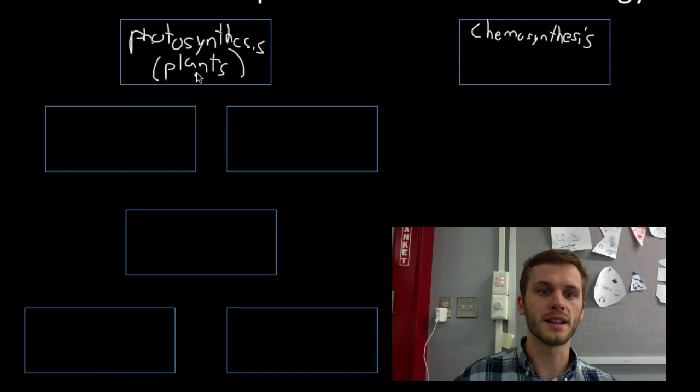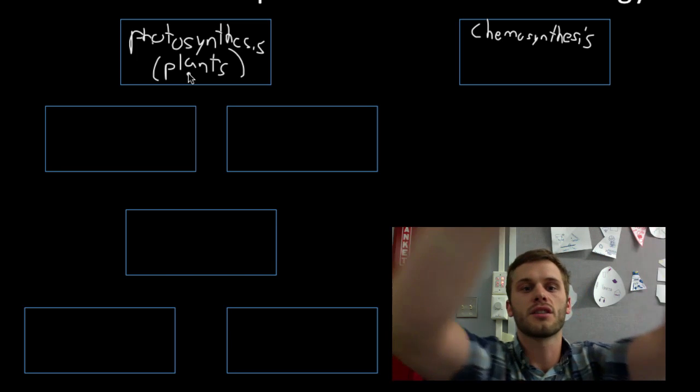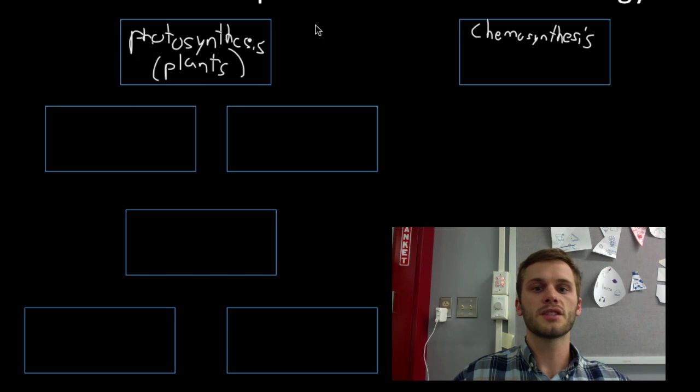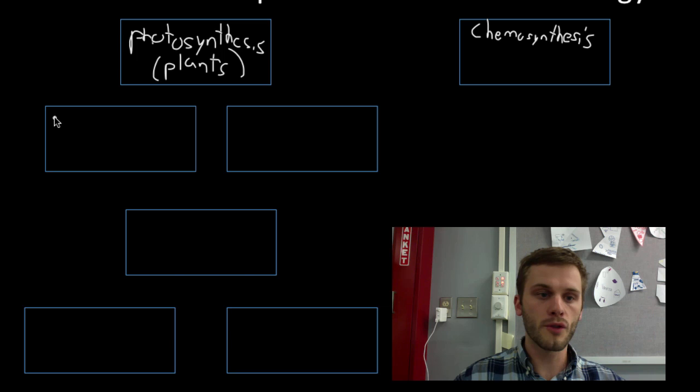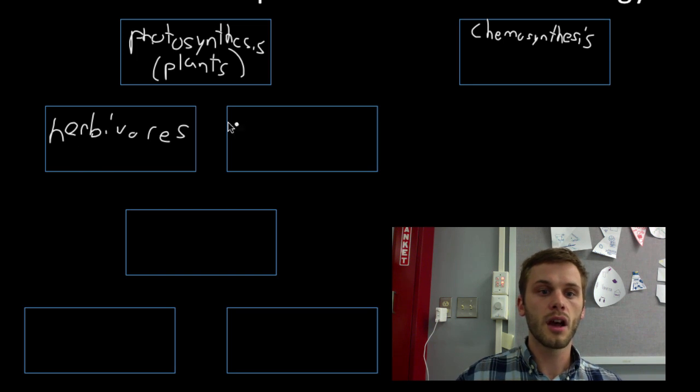Let's go back to our photosynthesis and plant example. There are different creatures that feed off of plants. There are things producing energy, and there are things below it that are consuming that energy that photosynthesis created. One example of that are herbivores. I always like to look at the term 'herb'—those guys eat plants.